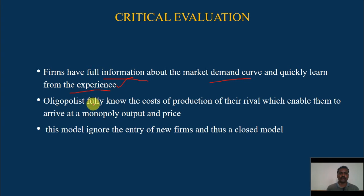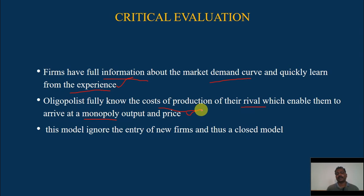Oligopolists are assumed to fully know the cost of production of their rivals, which enables them to arrive at the monopoly output and price. However, since cost of production differs among firms, it is very difficult to know the cost of production of each rival. This is another point of criticism.